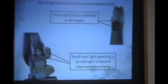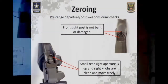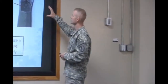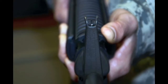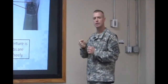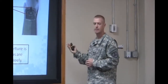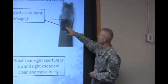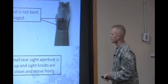Before we zero the rifle, we have some pre-range departure and post-weapons draw checks that we need to look for. If you've never fired the rifle you're drawing out to zero, you're going to want to check the front sight post to make sure it's not damaged — bent, or if somebody's grabbed it with a pair of pliers and tried to turn it without pushing down the detent. That damaged front sight post is going to make it very hard for you to zero that rifle. Make sure the front sight post is not bent and that the base of the front sight post is flush with the front sight housing itself.